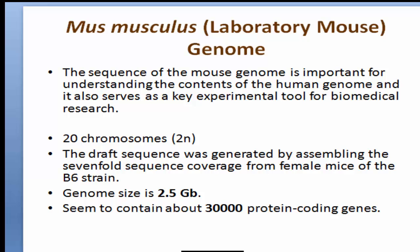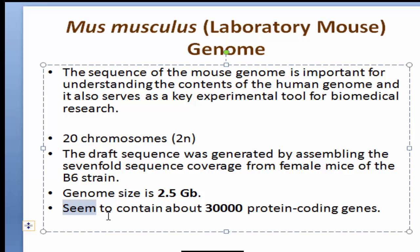Now we will discuss the mouse genome — the laboratory mouse. The genome size is 2.5 gigabases long. The interesting point is that it contains 30,000 protein-coding genes, the same as the human genome. So both human and mouse have 30,000 protein-coding genes — that is the most important similarity between mouse and human. In the mouse, 20 chromosomes are found, whereas in humans 46 chromosomes are found: 44 autosomes and 2 sex chromosomes.